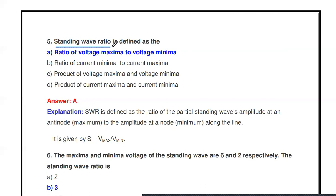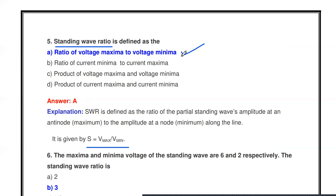The next question: standing wave ratio (SWR) is defined as — what? The SWR is the ratio of the maximum amplitude to the minimum amplitude of the standing wave. Specifically, it is the ratio of voltage maxima to voltage minima, or similarly, current maxima to current minima. Options like 'ratio of current minima to current maxima,' or 'product of voltage maxima and voltage minima,' are wrong. SWR = Vmax / Vmin.